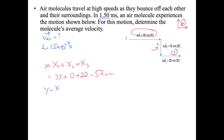For the net y-component: y1 plus y2 plus y3. There's no y-component in vector one, so y1 equals zero. Vector two goes downward, so y2 equals minus 15. Vector three has no y-component, so y3 equals zero. This gives us a net y of minus 15 centimeters.